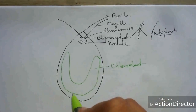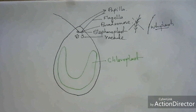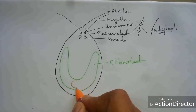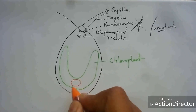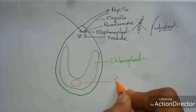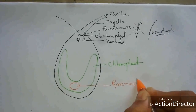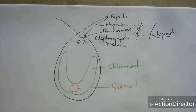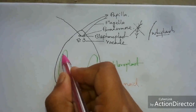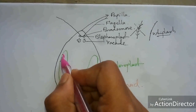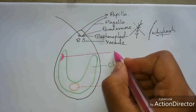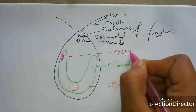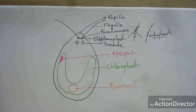On this chloroplast, as I mentioned in my previous video, pyrenoid granules are present. An eye spot is also present on this chloroplast.